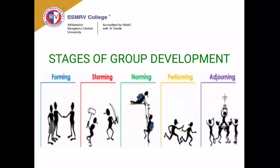In the forming stage, assignment of power structure, status, and affiliation takes place. Since members are not well-known to each other and things may seem alien, members can either be actively participating or somewhat apathetic. People who gel quickly may start engaging right away, while others who need more time may be a little apathetic. Essentially, you are getting to know each other and settling into your roles.